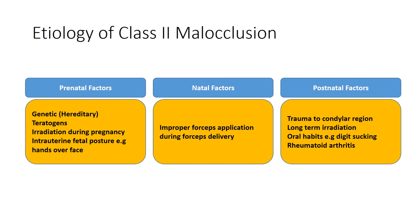The etiology of Class 2 malocclusion can be broadly divided into three groups: prenatal, natal, and postnatal factors. Prenatal factors include genetic or hereditary factors, teratogens, irradiation during pregnancy, and intrauterine fetal position — for example, if hands of the fetus lie over the face, that may impede mandibular development. Natal factors involve improper forceps application during delivery. Postnatal factors include trauma to the condylar region, long-term irradiation, oral habits like digit sucking, and rheumatoid arthritis.